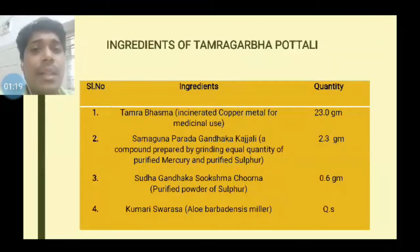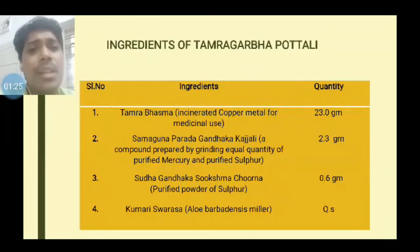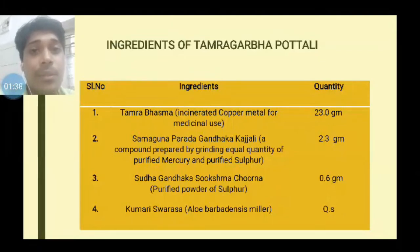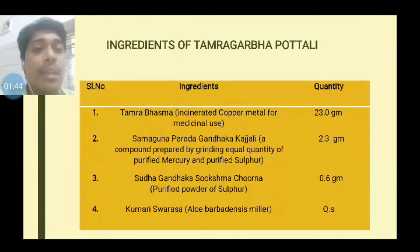The reference for preparing Tamaragarpa Portali is taken from Ras Shastra. There is a slight variation in that Svarna, which is gold, has not been added here. In the reference, Svarna Tantu or gold thread is used while preparing the Portali Kalpanas, but it is not added in this preparation. Apart from that, all the ingredients are taken, including Tamarag Basma, Samagana Partha Gandhaka Kajjali, and Shuddha Gandhaka Churna.